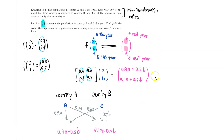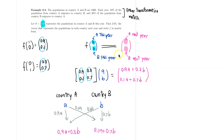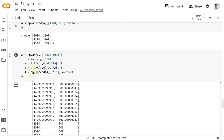So in the situation from the earlier example, what happens from year to year is the same as multiplying by this matrix. And notice that what we have here is also the same as what we put into Python earlier.